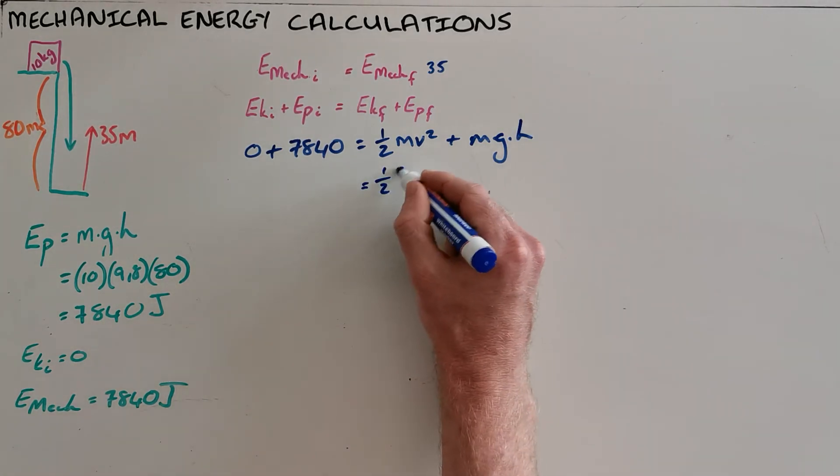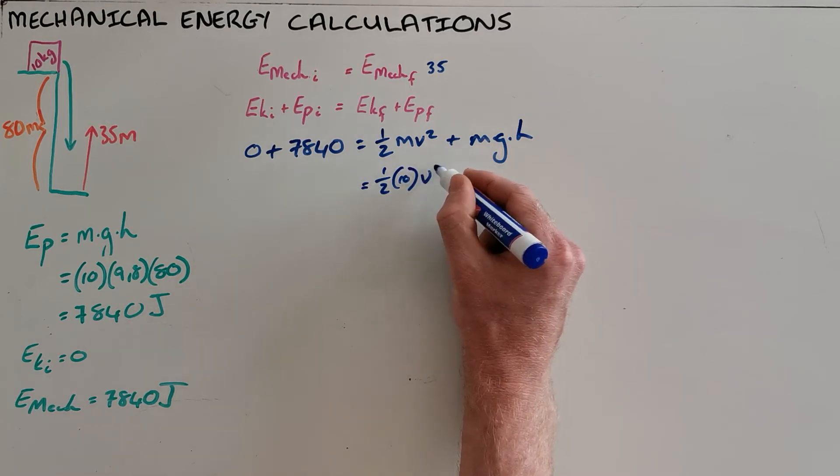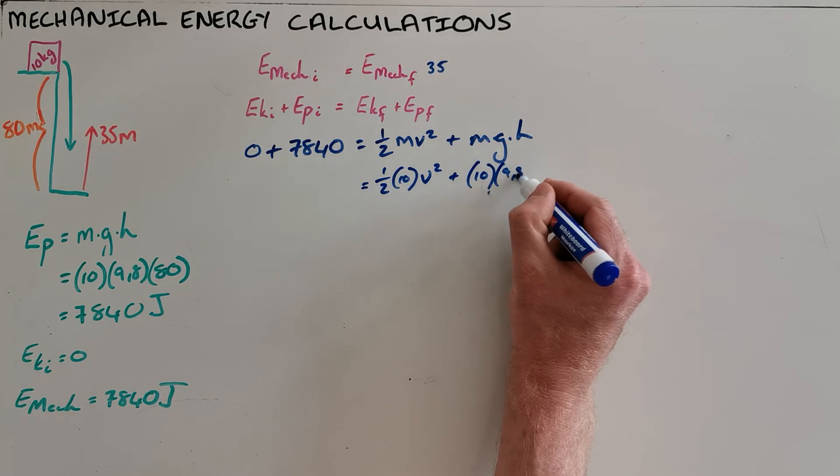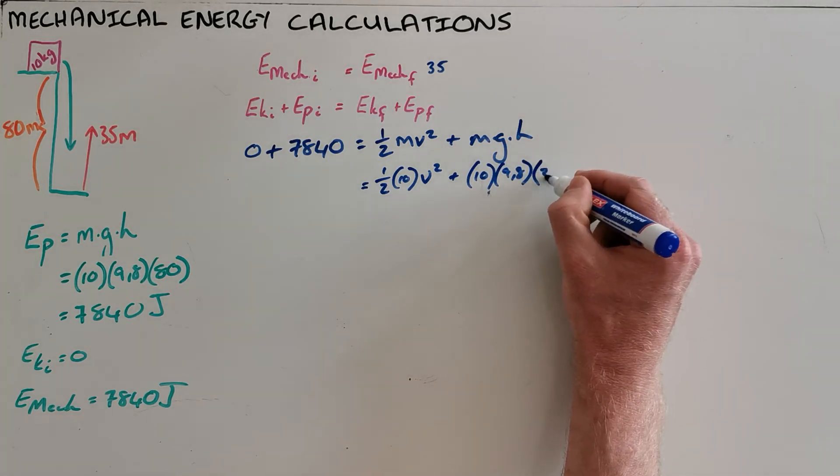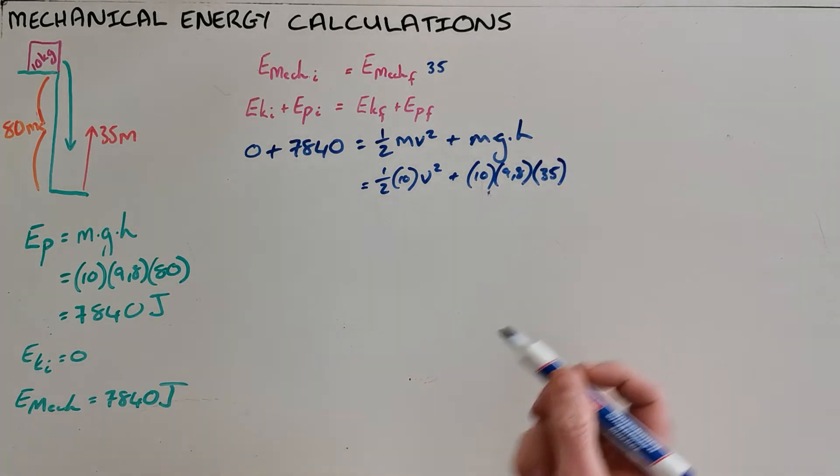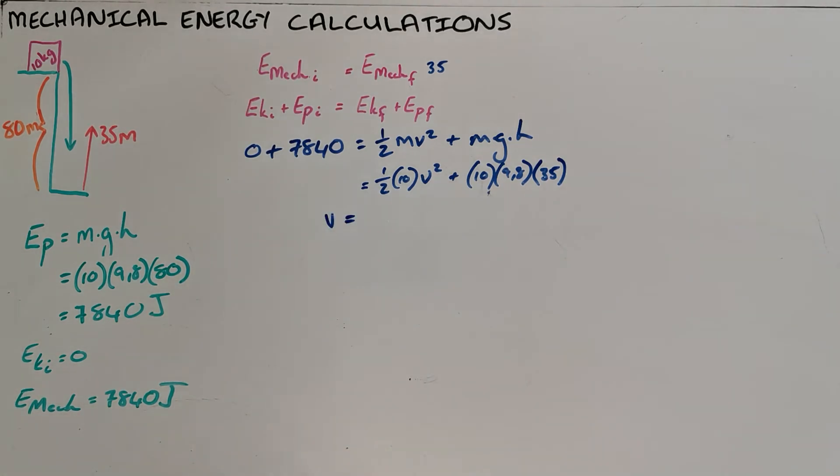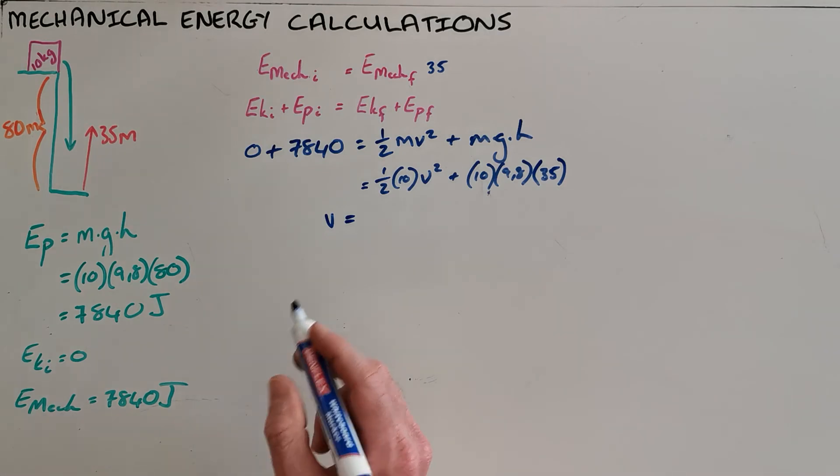We can substitute in the mass in kilograms, the velocity is our unknown, the mass in kilograms multiplied by earth's gravitation. Now this object is 35 meters above the ground meaning it has fallen 45 meters, and we can then solve for our unknown.